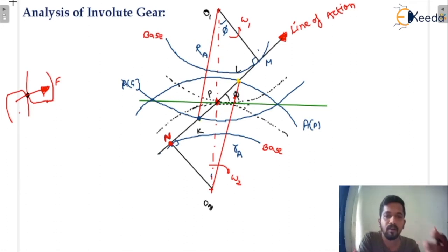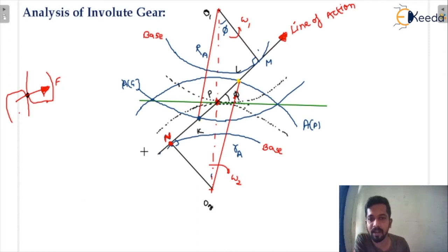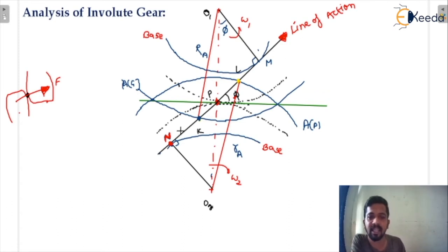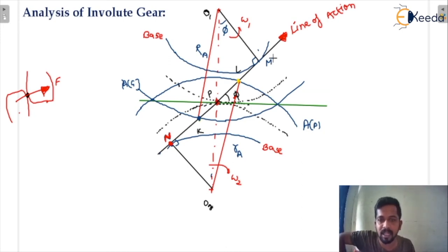The pitch point is on the line connecting the centers of rotation. Here you can see this is an involute gear profile, and there is a line of action. When two gears are in mating condition, one gear exerts a force upon another gear in that direction. The line of action is passing through the pitch point — it must pass through the pitch point in order to satisfy the law of gearing. Also, the line of action is tangent to the base circle.